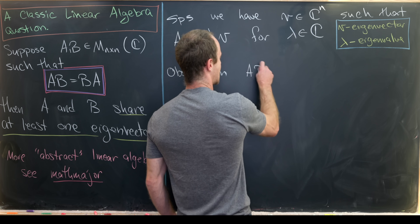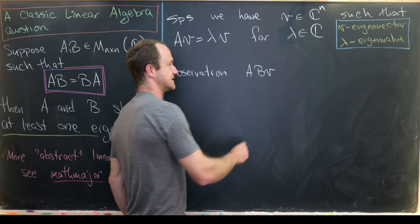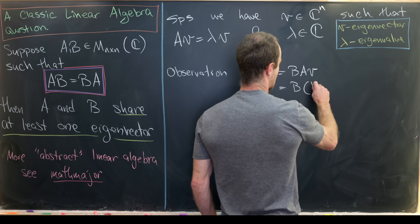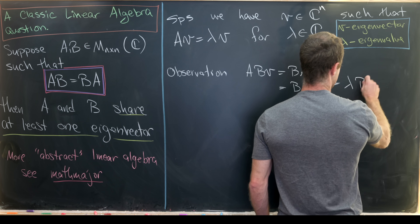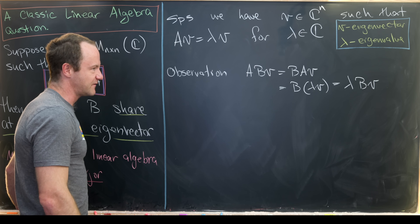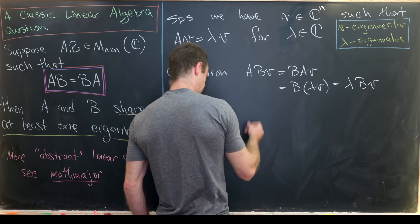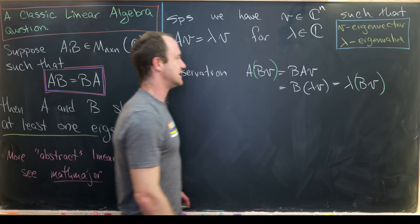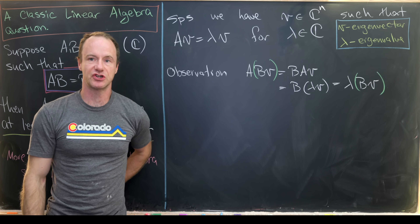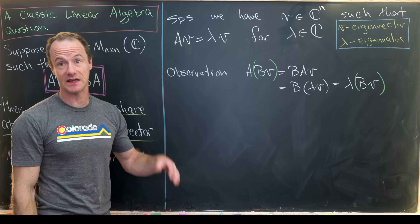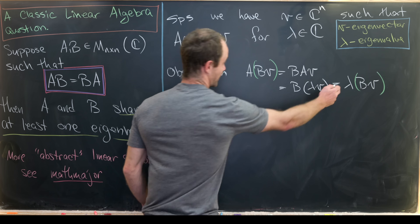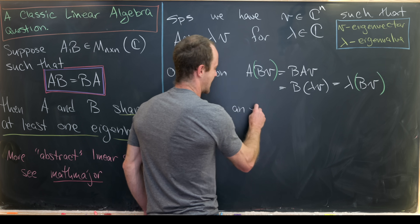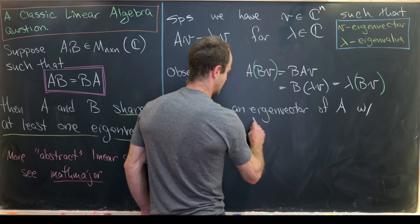Now let's make the key observation using our given. Notice that A times BV equals B times AV, which equals B times lambda V, which equals lambda times BV. Filling in parentheses around BV, we see another eigenvector-eigenvalue relationship for matrix A. So B times V is also an eigenvector of A with eigenvalue lambda.